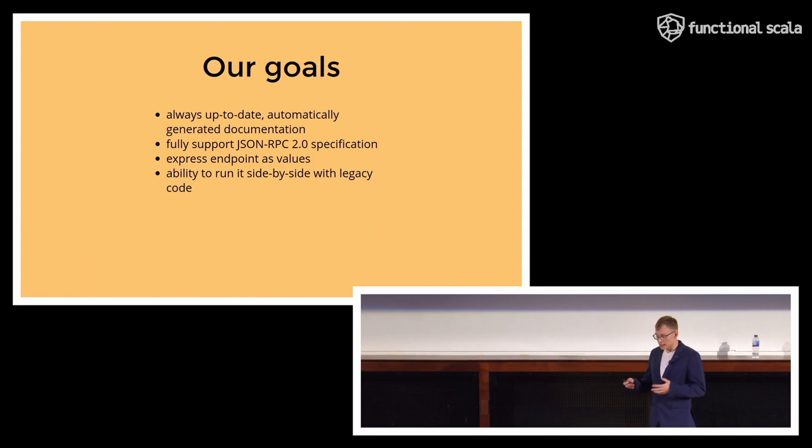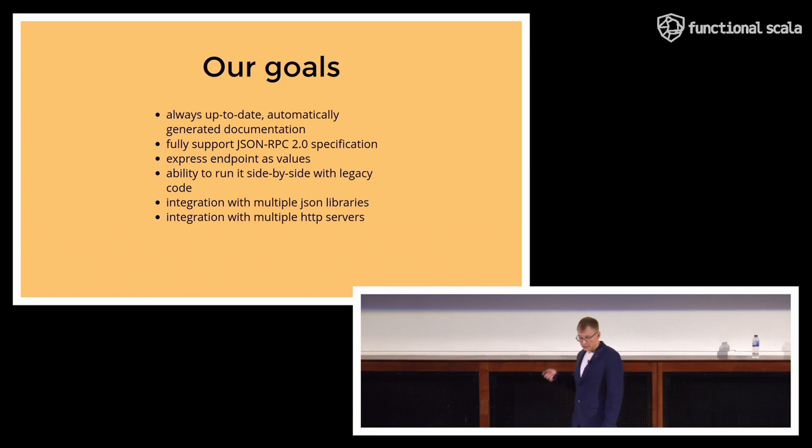As we have already written some of the endpoints using previous initial approach, we want to have ability to run our legacy endpoints side by side with the new endpoints to allow for incremental migration of our API. And we want to support multiple JSON libraries, so we won't be limited to using a single one, and in the future we may be able to migrate to use some other JSON library. And the same story actually goes with HTTP servers.